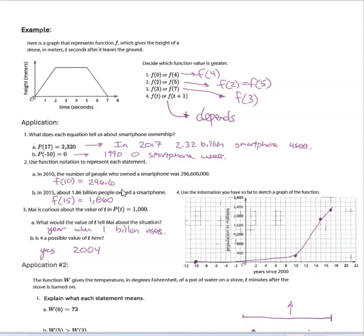But if this was just a line going up from left to right, then F of T plus 1 — meaning an X value slightly bigger than the original — is going to give a bigger Y value.